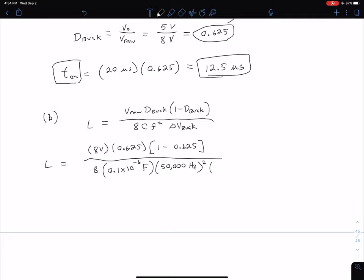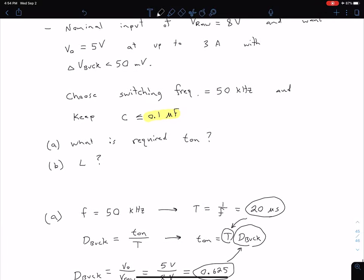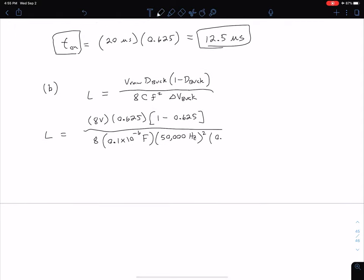And finally, we have our delta V_buck, which I'm going to put in volts. Coming up here to our problem statement, we had that we wanted to keep this less than 50 millivolts. So we're going to say, let's design it just so it's right at that limit of 50 millivolts to make things easier here.